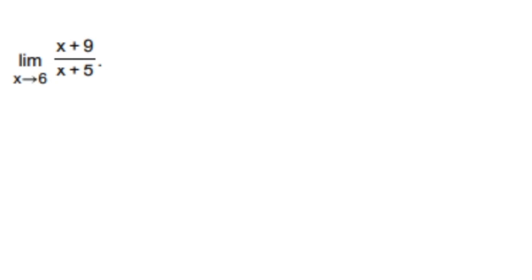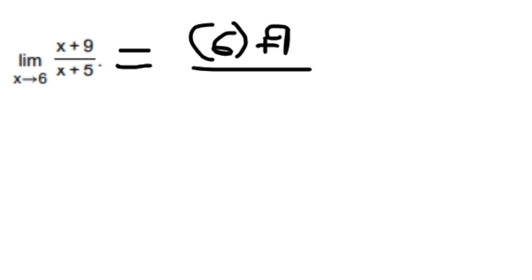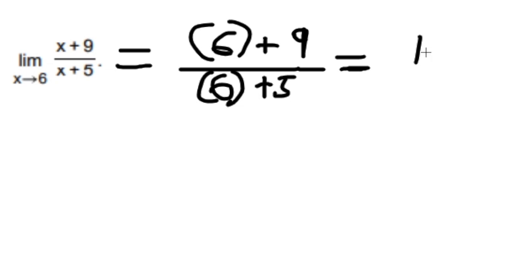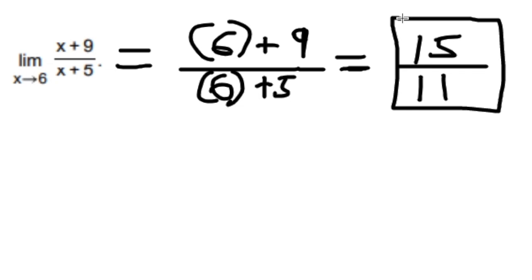For this problem, the limit is as x goes to 6. All we do is plug in 6 for x. On the top we have x plus 9, and on the bottom we have x plus 5. So we get 15 over 11, and this can't be simplified, so this is our answer. When x goes to 6, the y value would be 15 over 11.